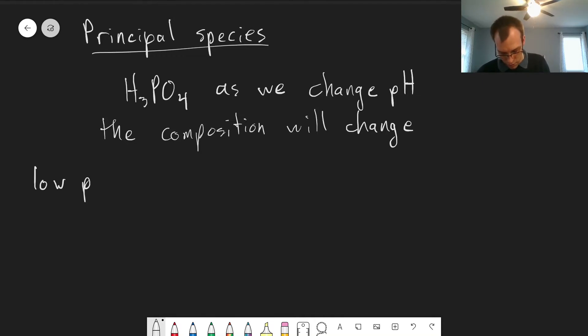So at very low pH, we will have, not all, but mostly H3PO4. So we'll have the fully protonated form.